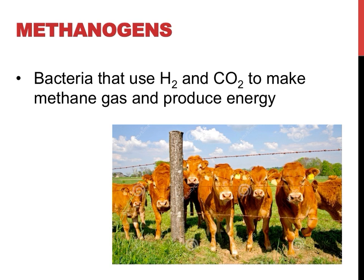Methanogens are another classification of Archeobacteria. These organisms are all characterized by their ability to produce methane gas. Methane gas smells, so you usually find methanogens in smelly places — bogs, sewage treatment plants, and the intestines of livestock are a few examples. These organisms use hydrogen gas and carbon dioxide to produce methane gas, and most are classified as chemoautotrophs.